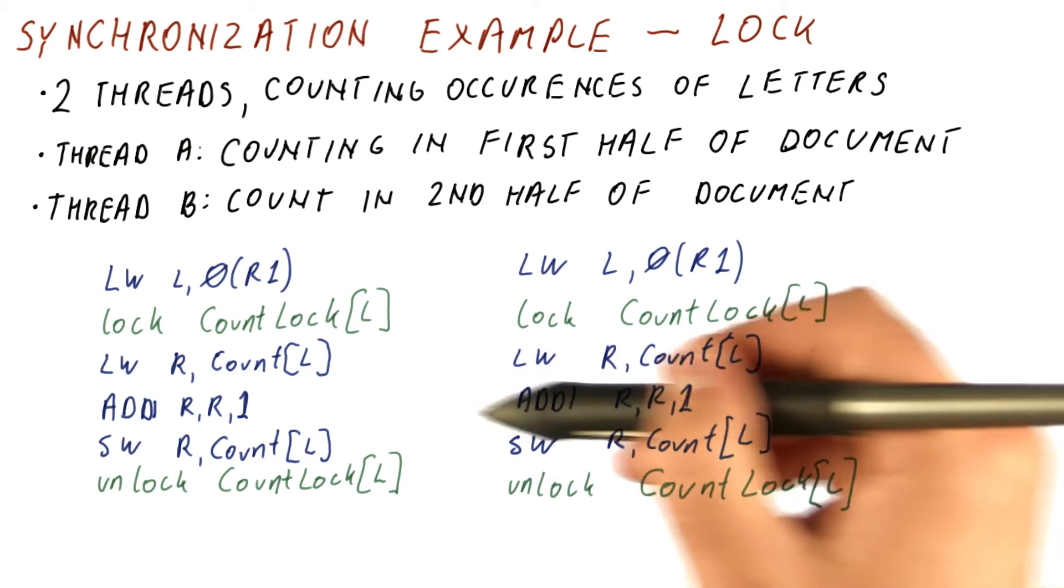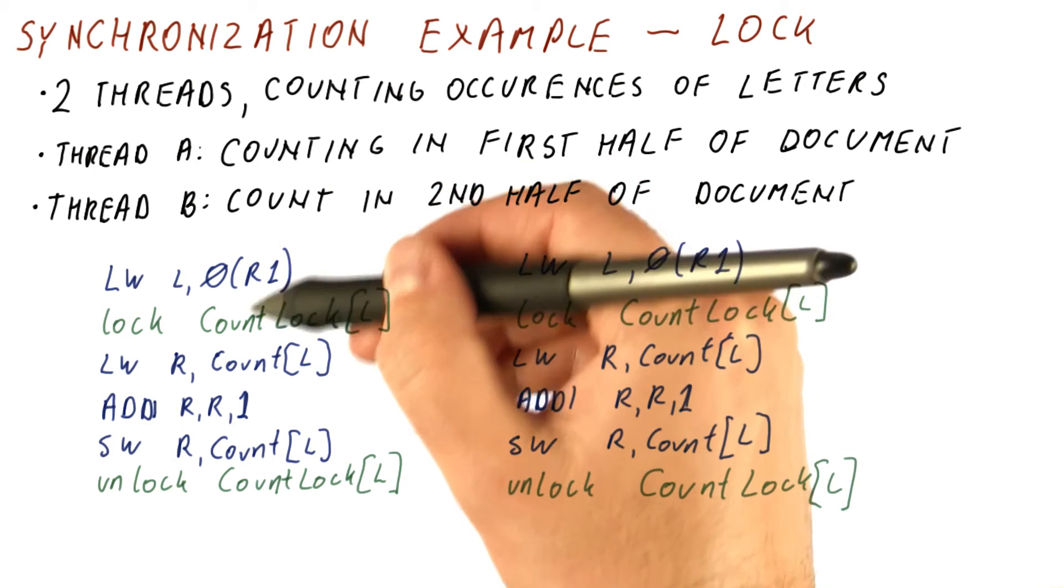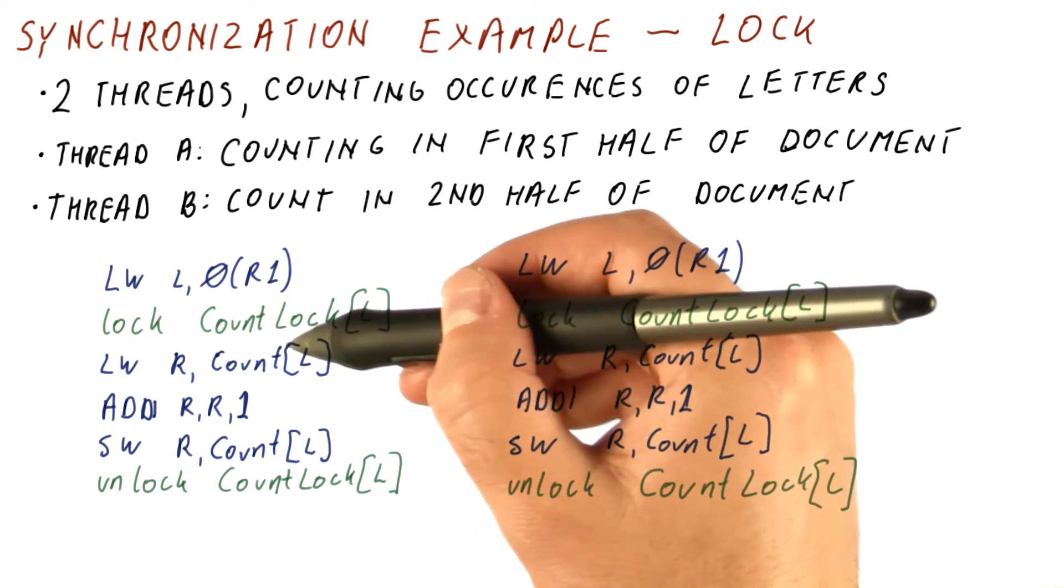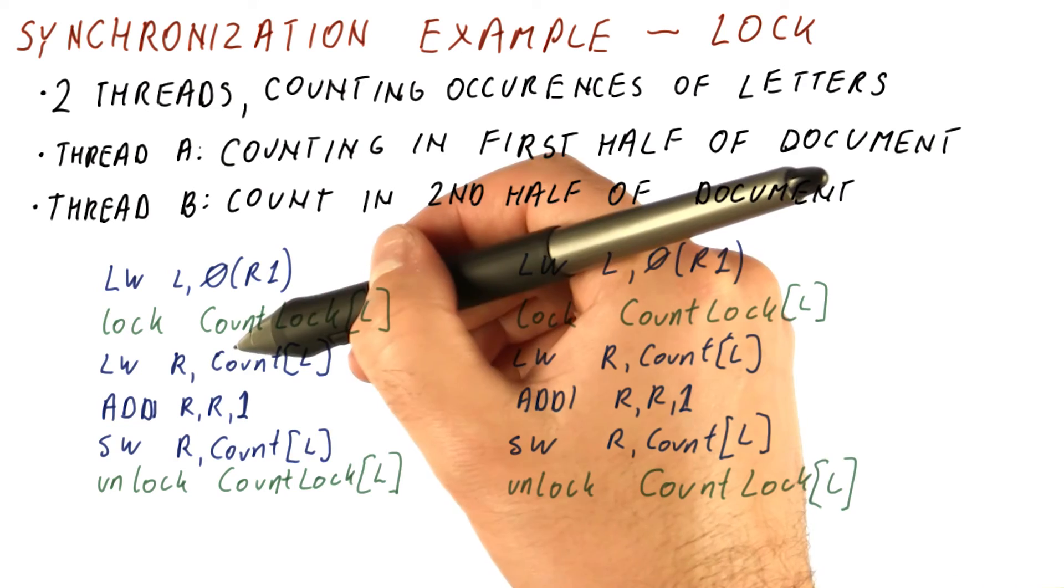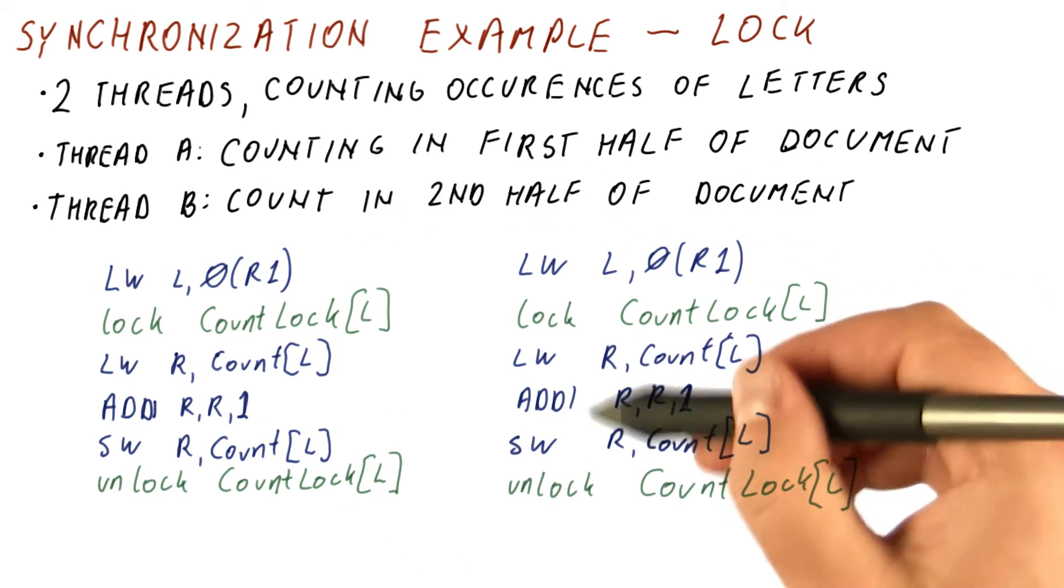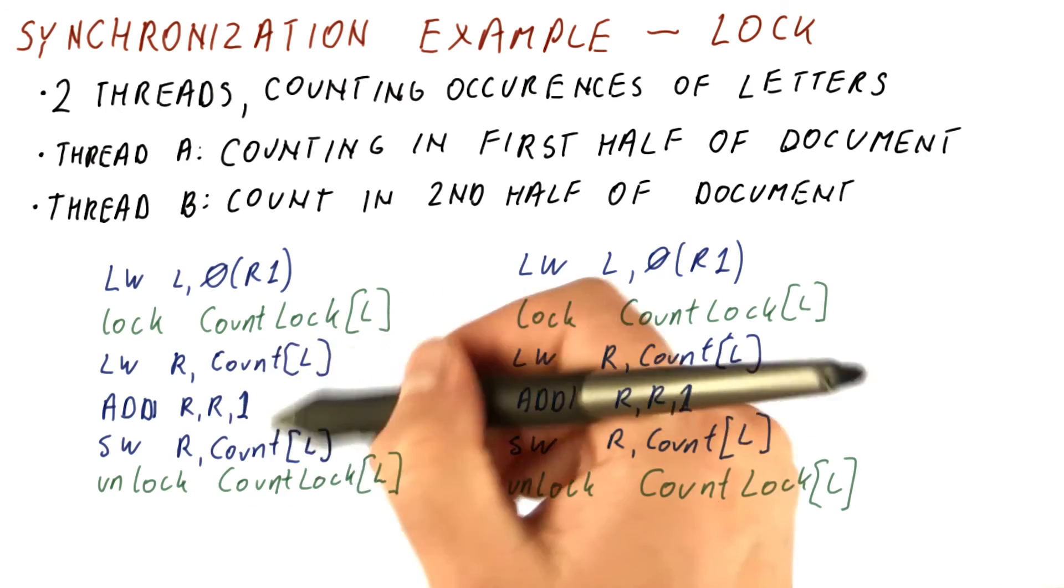But it doesn't impose a particular order between them. So whichever of them comes first to this lock will execute its critical section first. So we can either have this happen first and then this happen second, or we can have this happen first and this happen second.